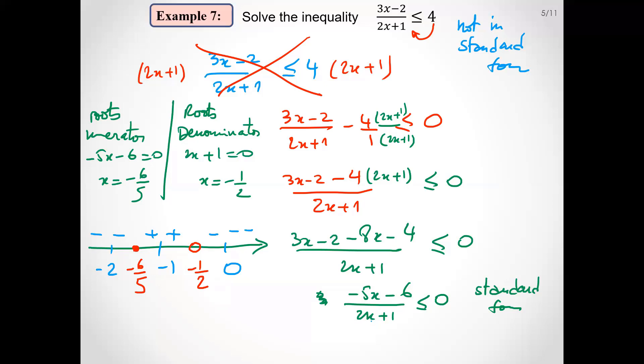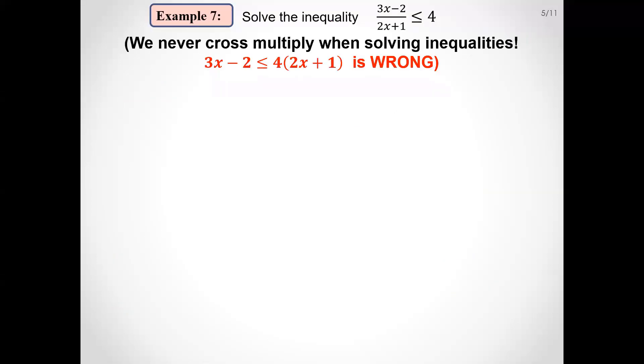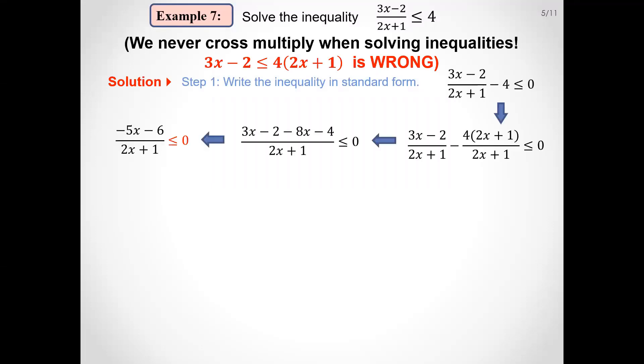We need non-positive, so the solution set is this piece and this piece. We start from minus infinity to minus 6 over 5, we close, union. To join these pieces, we open at minus half. Be careful, here we open even though we have less than or equal.